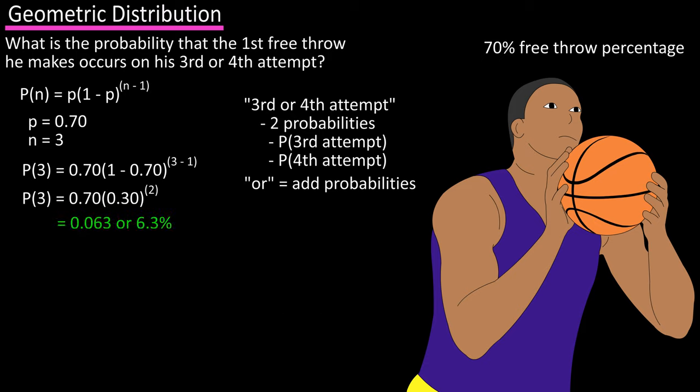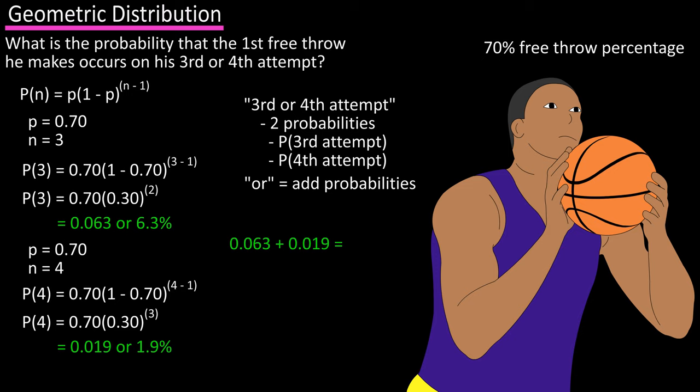Now for the fourth attempt, we have probability of four equals 0.70 times one minus 0.70 raised to the four minus one. Calculate out, and we get 0.019, or 1.9%. Next we add these together,